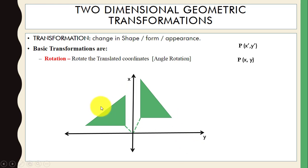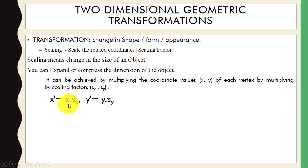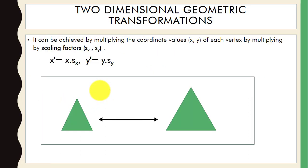Next is scaling. Scaling means we can change the size of an object — you can expand or compress the dimension of the object. We achieve this by multiplying the original coordinate value of each vertex by the scaling factors. We can change the size of the object from smaller to larger or larger to smaller. That's how scaling works.